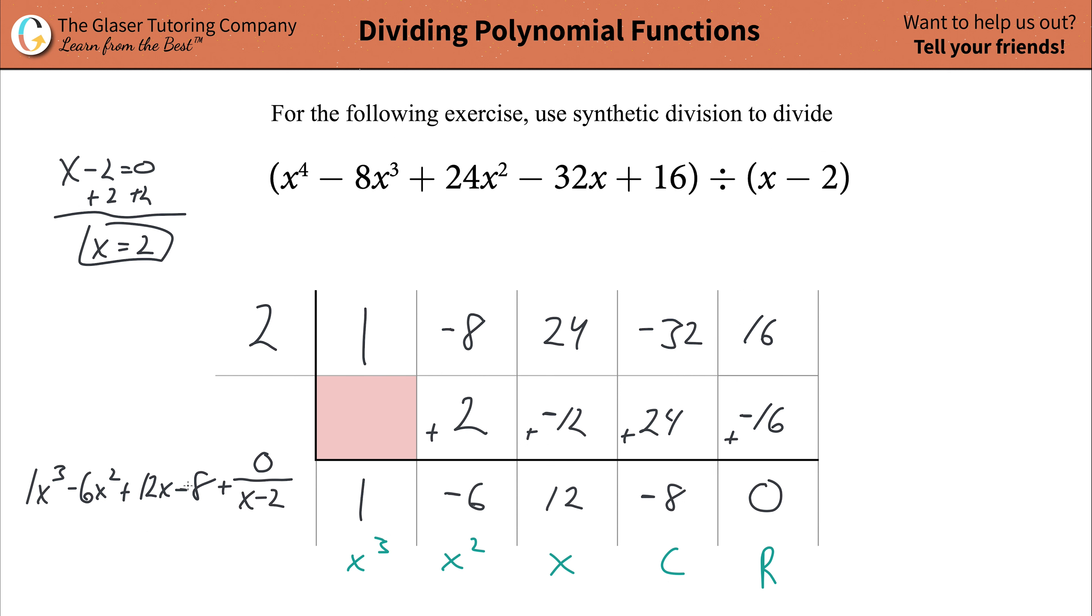Now, from here, just clean it up. You can get rid of certain things. You don't need the 1 there, so just write x cubed, then write minus 6x squared, plus 12x, minus 8. And then 0 divided by anything is just 0, so you don't have to write that. This would then be the final quotient, and that's the final answer of this synthetic division.